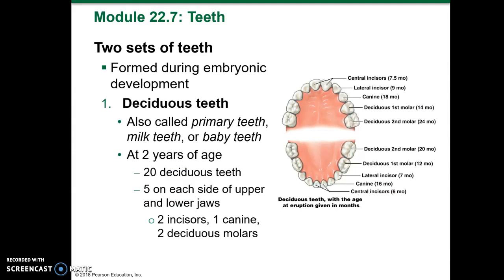There are two sets of teeth through life, both formed during embryonic development. The deciduous teeth — also called primary teeth, milk teeth, or baby teeth — number 20 at two years of age: five on each side of the upper and lower jaws, consisting of two incisors, one canine, and two deciduous molars per side.